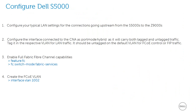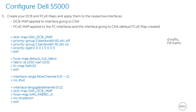Next, we configure the Dell S5000 switch. First, configure your typical LAN settings. Second, configure the interface connected to the CNA as port mode hybrid, as it will carry both tagged and untagged traffic. Third, enable full fabric fiber channel capabilities. Fourth, create the FCoE VLAN. Fifth, create your DCB and FCoE maps and apply them to the respective interfaces.